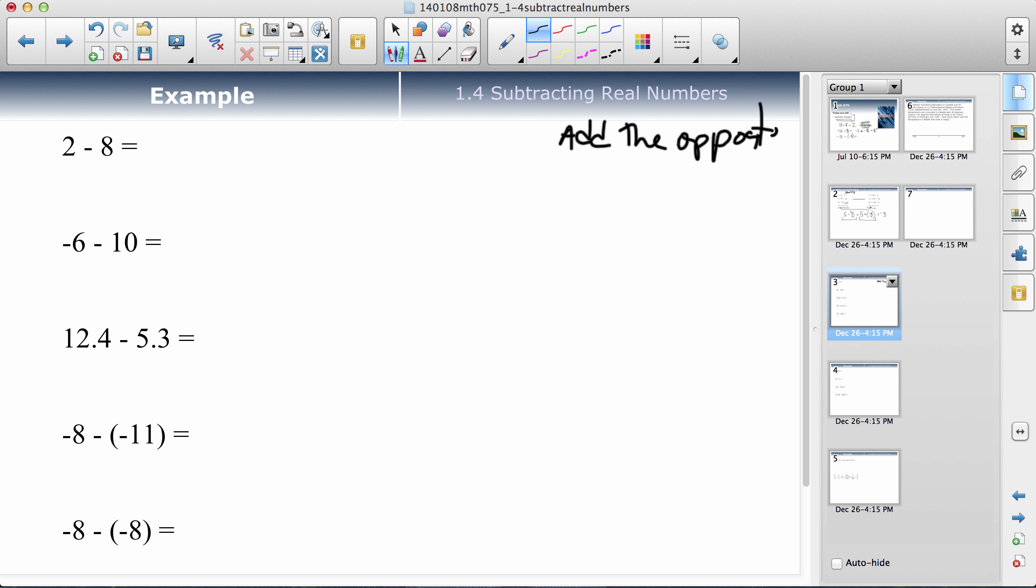So when we're subtracting, and this works every time, I can add the opposite. It takes a little bit more time. I could have maybe written this as negative 6, I would know that right away, but it takes a bit more time, but might as well write it. So I'm going to go 2 plus, and the 8 becomes negative. Now my rule for adding is different signs subtract. 8 take away 2 is 6, and the thing furthest from zero is this negative 8, so my answer would be negative 6.